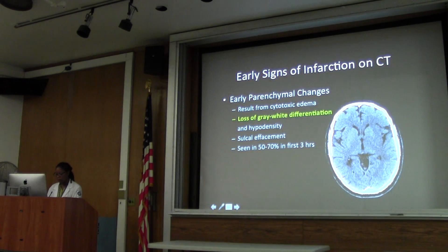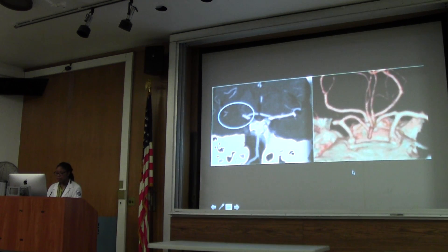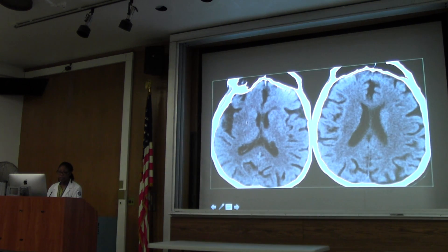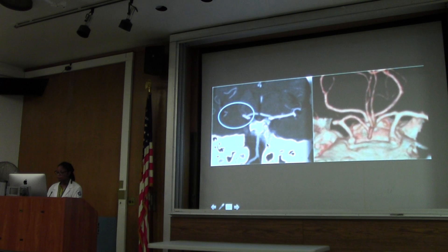This patient has a CTA and you can see the MCA is being cut off. That's a very early sign of MCA territory stroke.